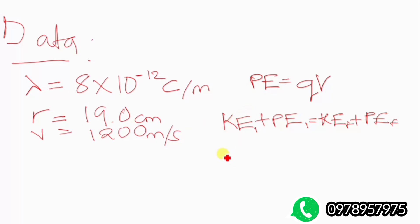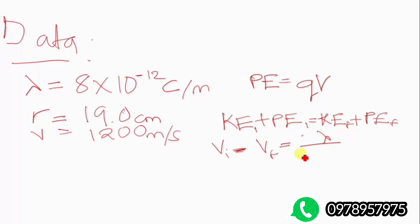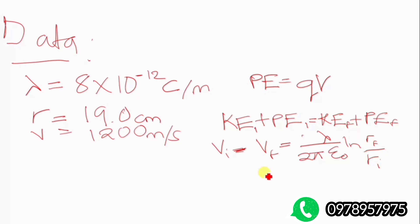The other equation we need to know is the voltage difference: V initial minus V final equals lambda over 2 pi epsilon times the natural log of r final over r initial. Once you know these equations, it will be easy to solve the problem.